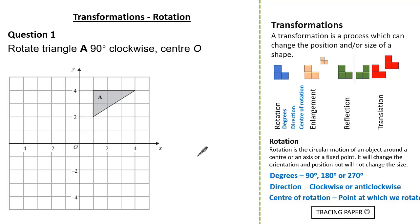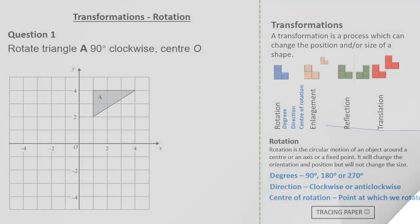So first let's get our tracing paper. And we simply trace the centre of enlargement and our shape. From here we put our pen point on the centre of enlargement. We simply rotate our tracing paper 90 degrees clockwise.